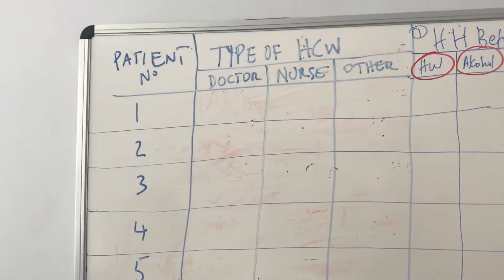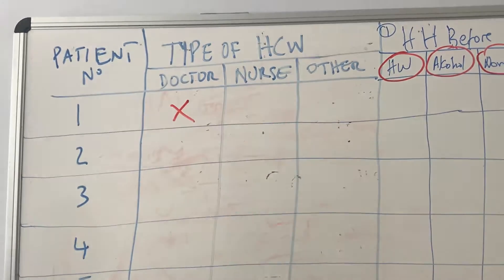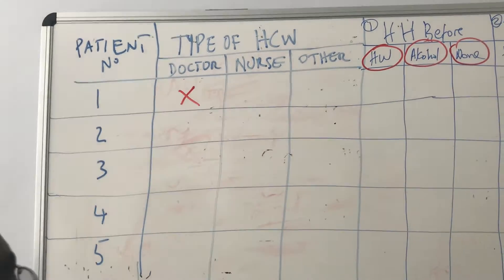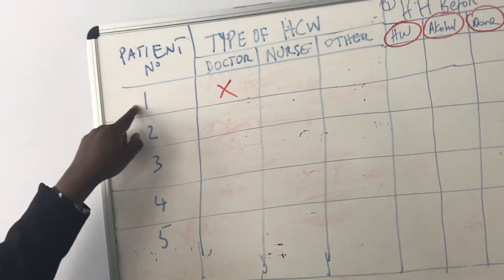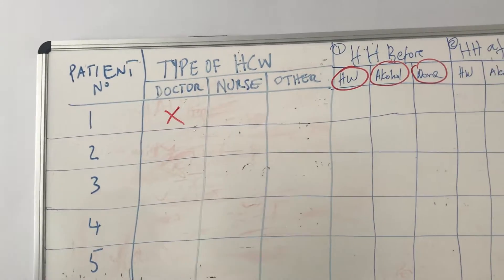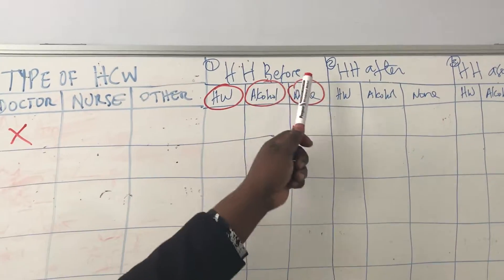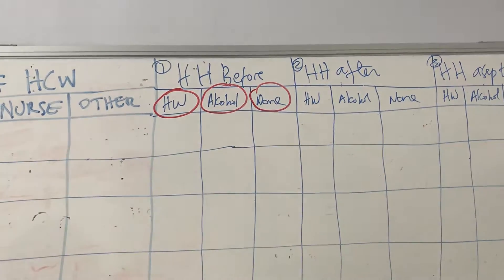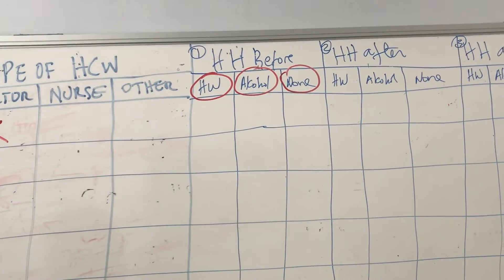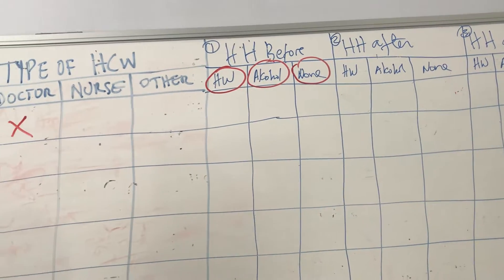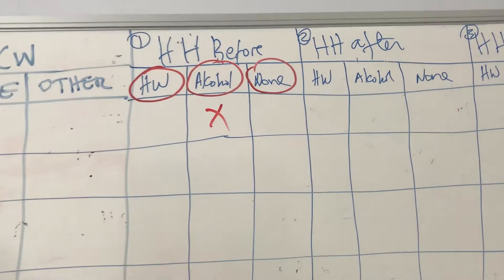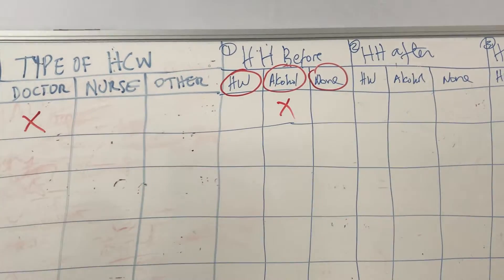The first person that you target is a doctor. This doctor comes in, walks into the ward, and he is going to see patient number one. So it means that he has an opportunity here and the indication that you are looking at is hand hygiene before patient contact. He arrives and decides to use alcohol hand rub, so you tick there that he used alcohol.